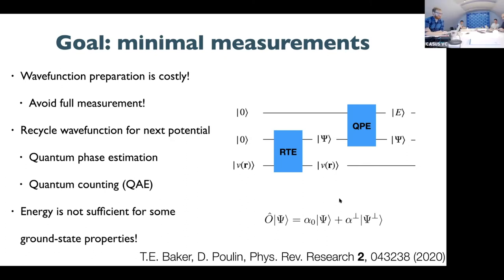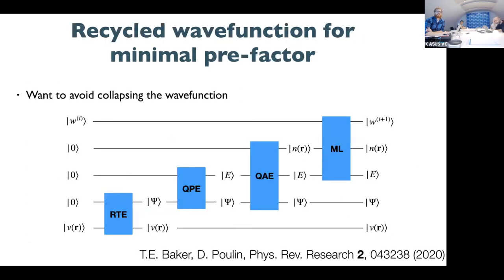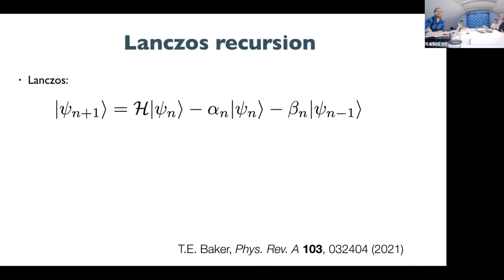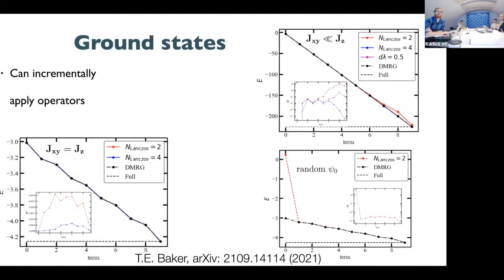One more question: on the continued fraction representation, there was a plot I didn't quite understand. The x-axis labeling the terms and the Lanczos methods with two and four confused me. The x-axis refers to the number of coefficients — or levels in the continued fraction — used to obtain the ground state. You start with some variables in an XY model, a one-dimensional XY model, and add the ZZ term. If you add the first one and run the Lanczos algorithm for two steps you get basically the correct answer; four steps gives a slightly better answer but you can see error propagation.